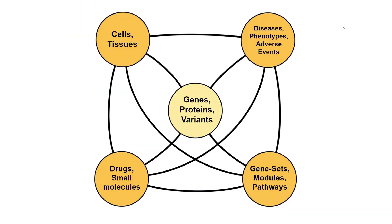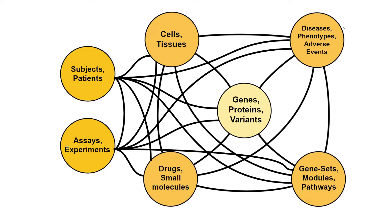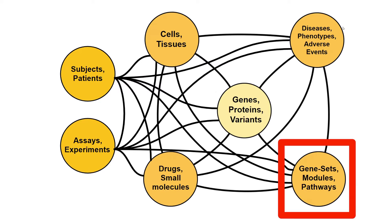At a very high level, you have binary bipartite associations between genes, proteins, and variants to gene sets, modules, pathways, drugs, small molecules, cells, tissues, diseases, and phenotypes. All of those things can be connected through those relationships if they are abstracted to high-level terms, and then you can build databases and tools. More recently, we also added subjects, patients, assays, and experiments to this diagram. We're really focusing on gene sets, modules, and pathways in our curation process.